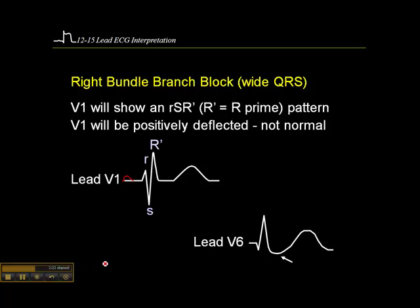In lead V6, we look for a Q wave and R', and then a slurring of the S wave. Although, as I said, quite frankly the criteria I look at is V1 and V1 only — but this is just supportive information.